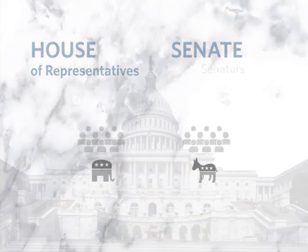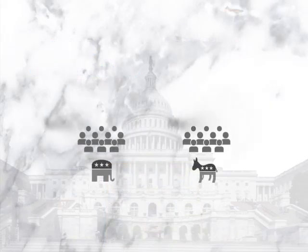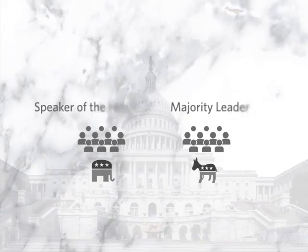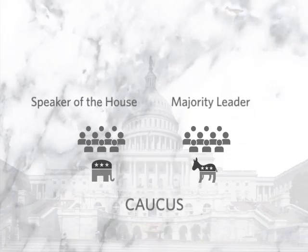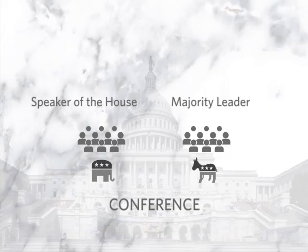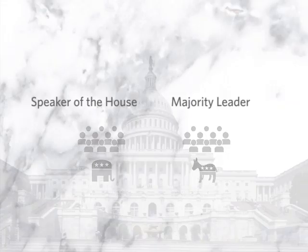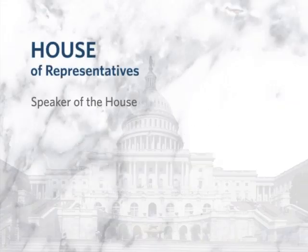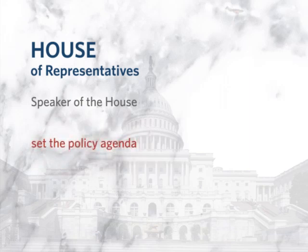Congressional action is typically planned and coordinated by party leaders in each chamber, who have been chosen by members of their own caucus or conference — that is, the group of members in a chamber who share a party affiliation. Majority party leaders in the House have important powers and prerogatives to effectively set the policy agenda and decide which proposals will receive floor consideration.